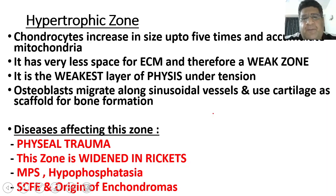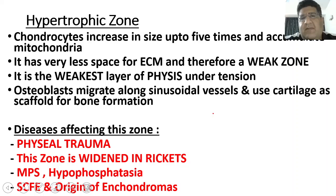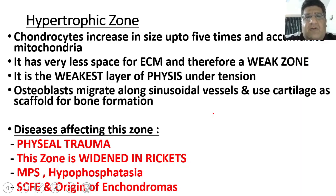Because there is so little extracellular matrix, ironically it is the weakest layer of the growth plate. Why do we call it a maturation zone? Because now the cartilage will start maturing into bone. Osteoblasts enter this area — sinusoidal vessels bring them in, they migrate along those vessels, and they use the cartilage as a scaffold to make bone over it. The cells increase to five times normal size, but due to less extracellular matrix, this remains the weakest zone of the entire physis.